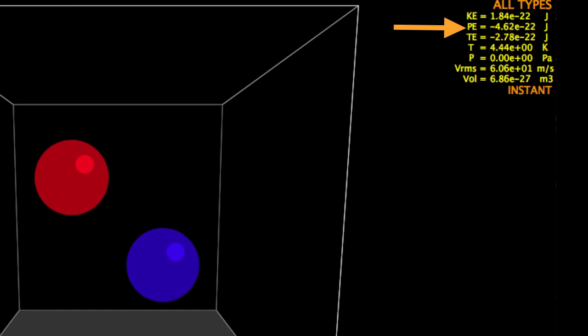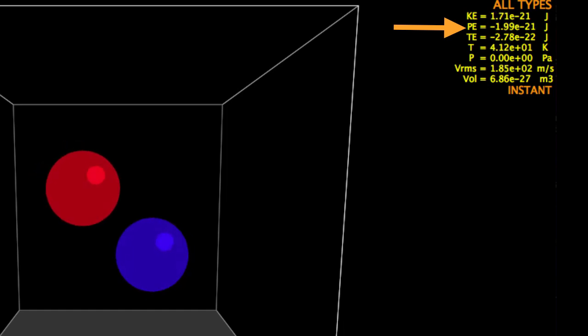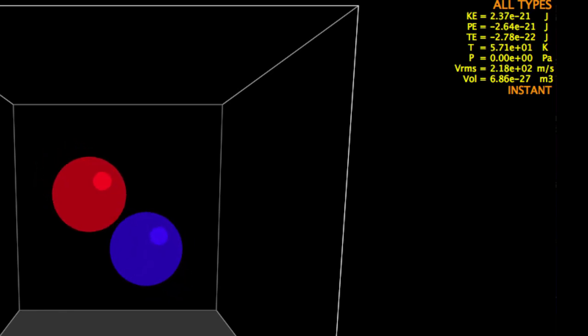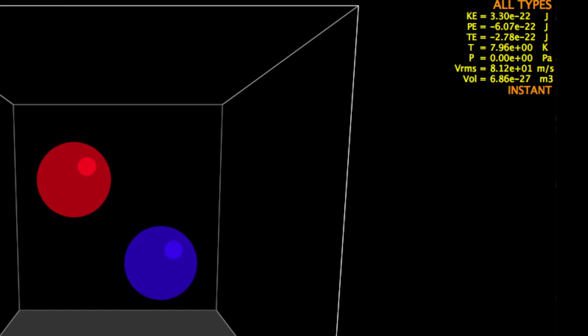What's the total potential energy when they're out here? It's like minus 3 times 10 to the minus 22. So these were all times 10 to the minus 21. Now the new minimum potential energy, or sorry, maximum potential energy, is 3 times 10 to the minus 22.